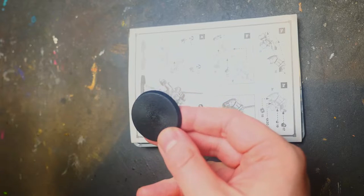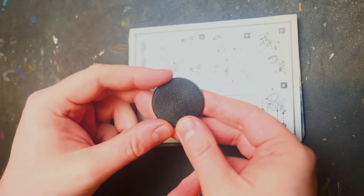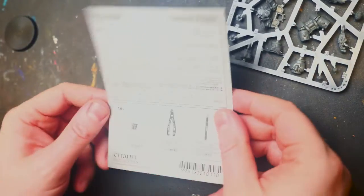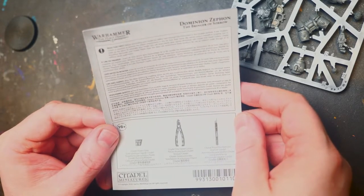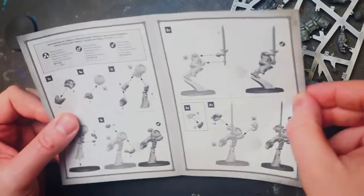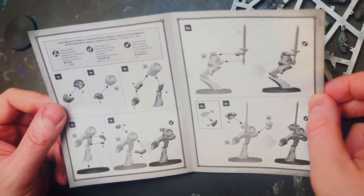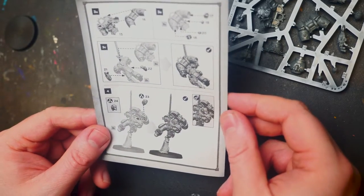We got the sprue and the instructions right here. That's building the torso and body, putting him on his little rock, got his big sword, his bubbly shoulder pads, and backpack. I will be building this right now, gonna be pretty quick.